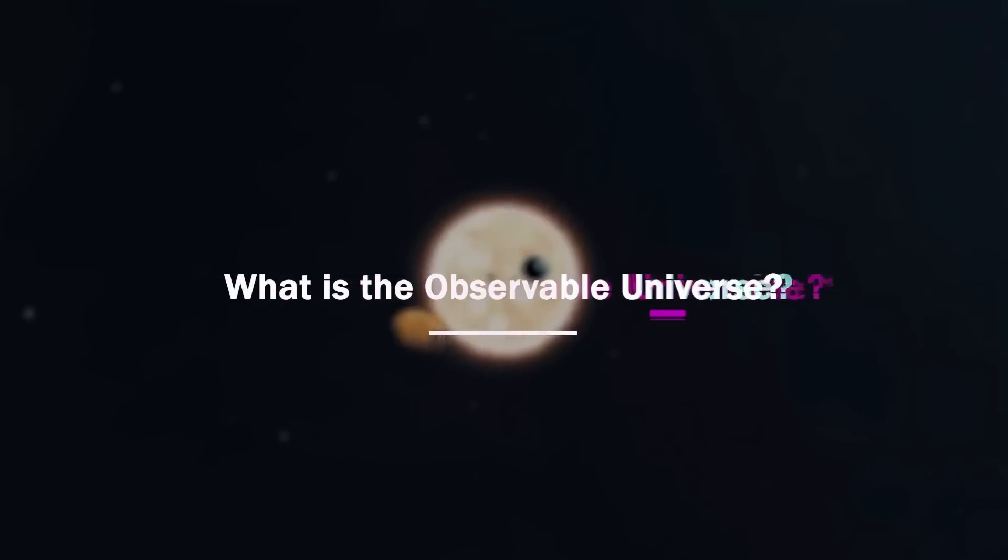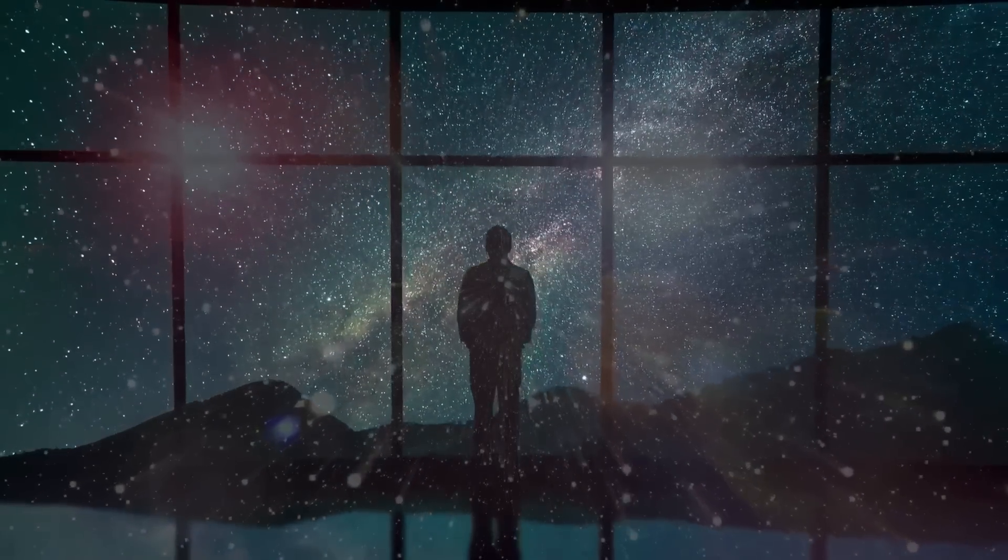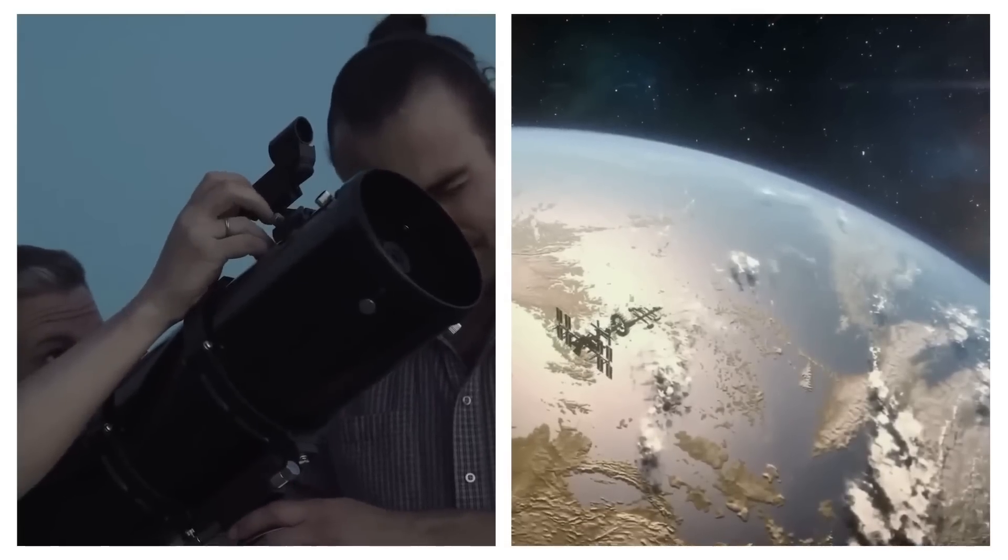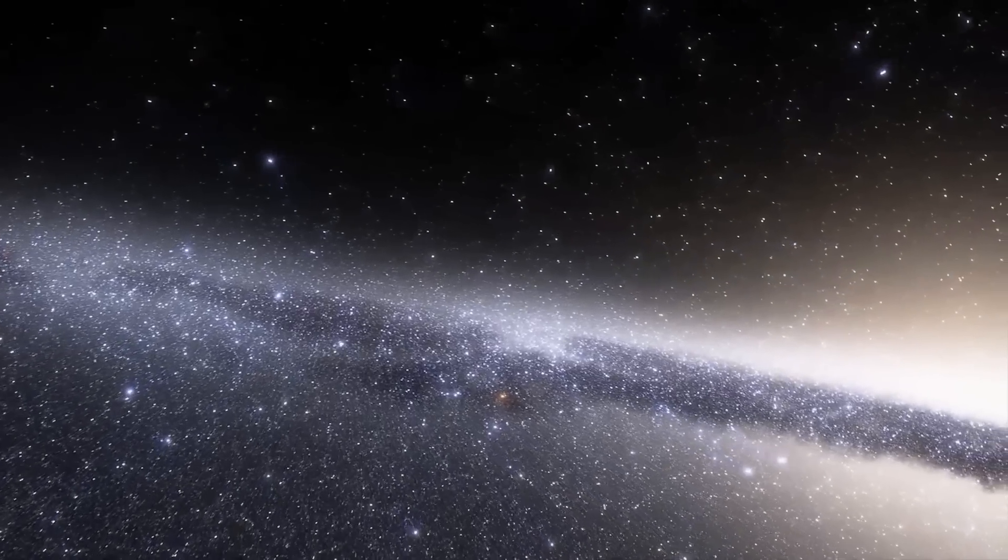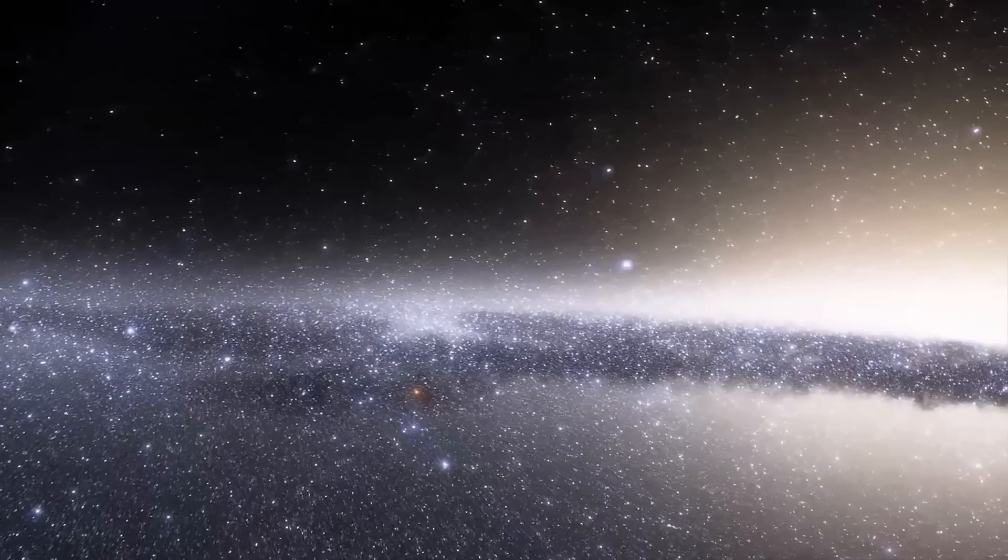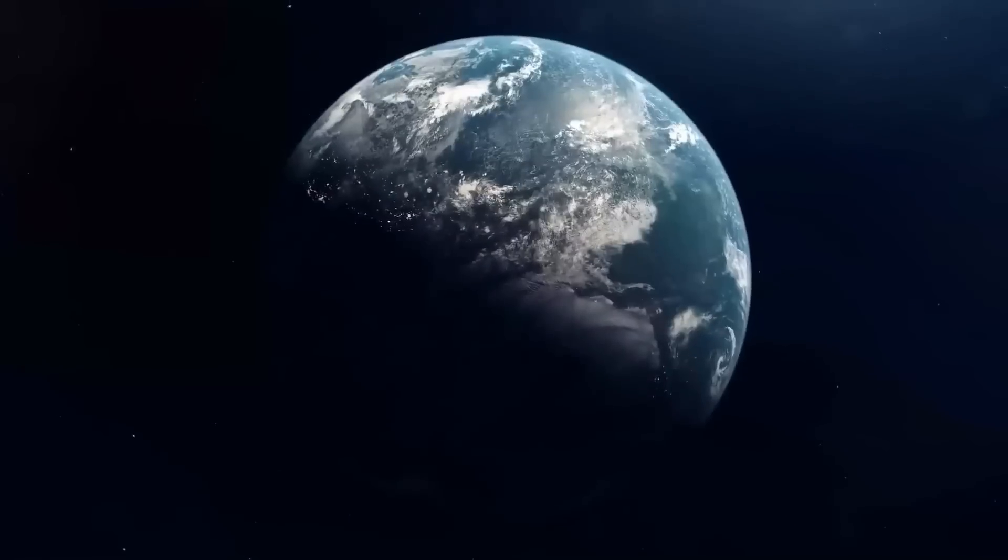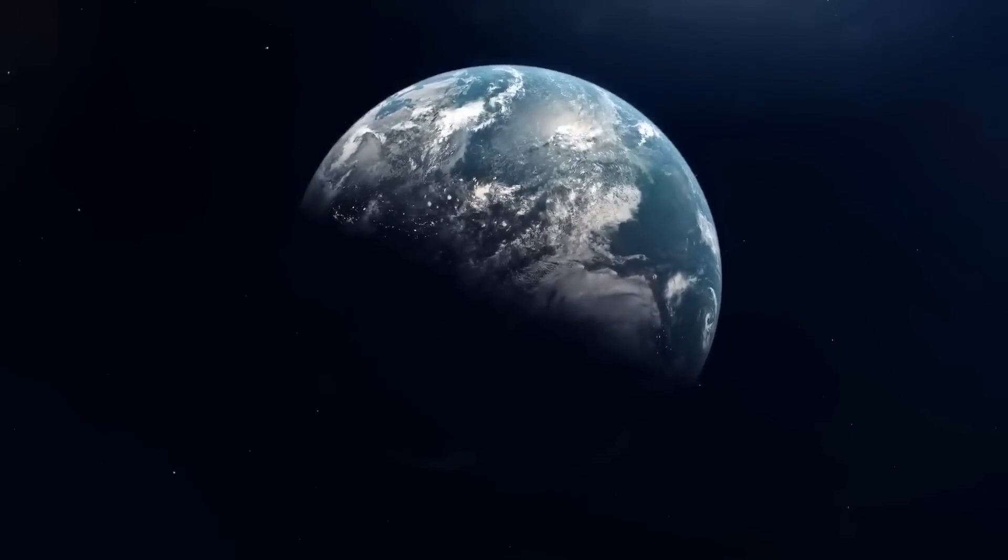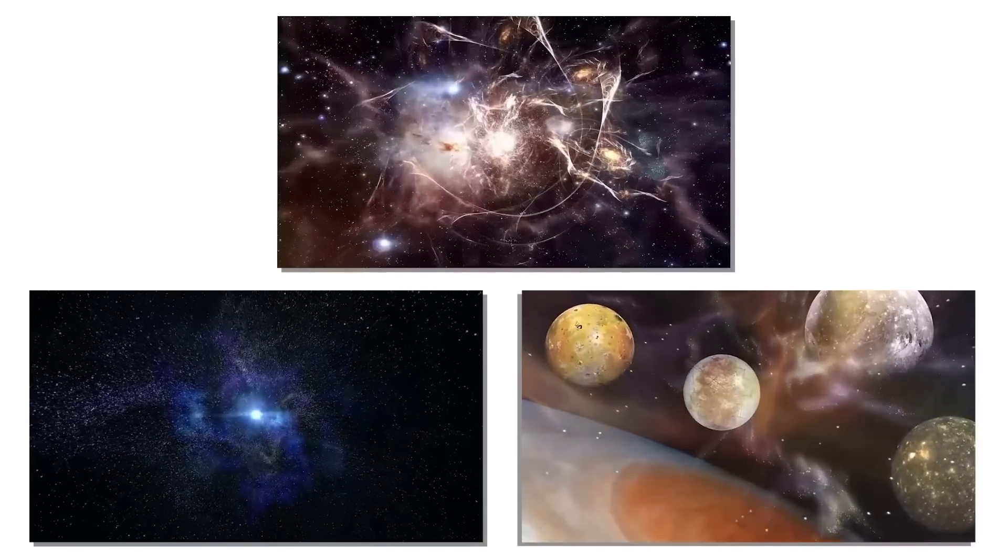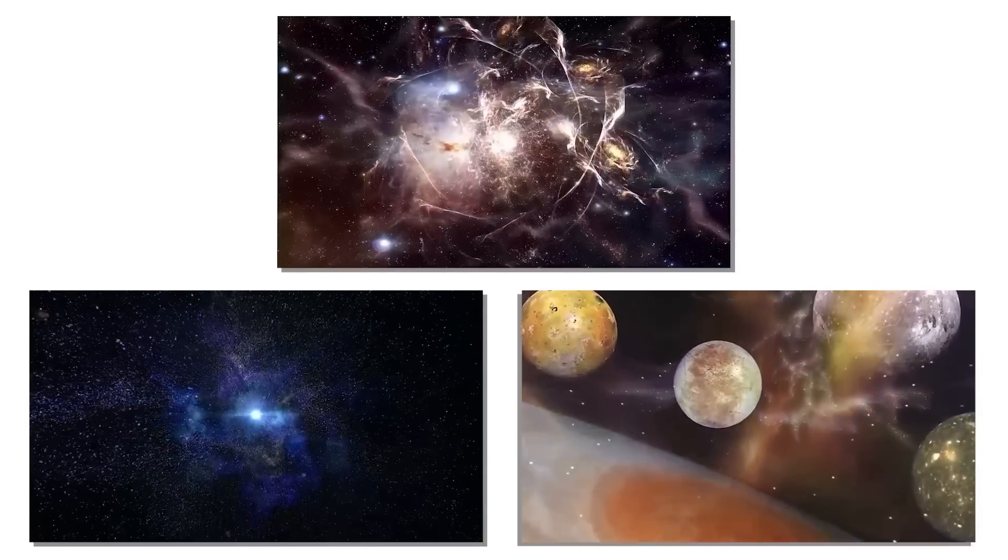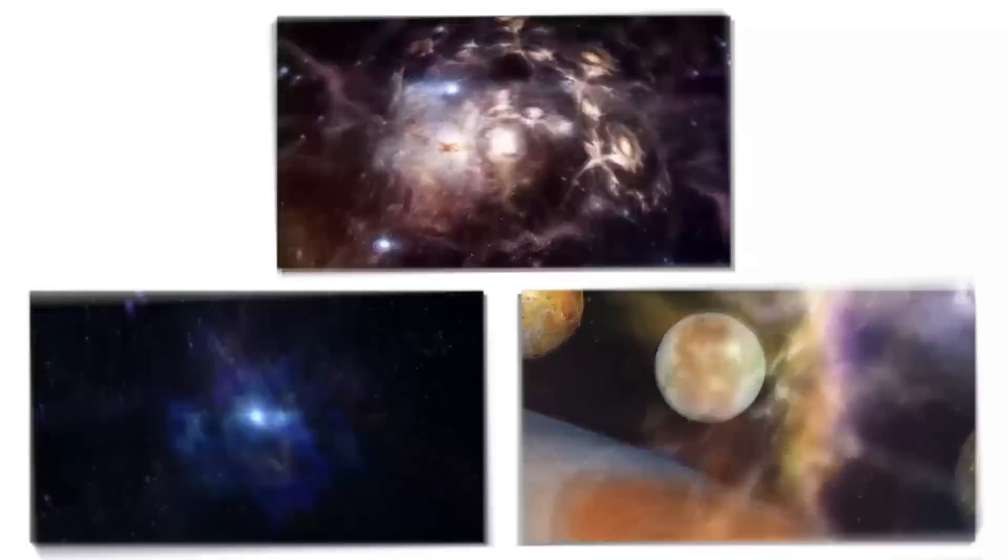What is the observable universe? The observable universe refers to the part of the universe that we can observe and study through telescopes and other instruments. It is limited by the fact that light, the primary way we gather information about the universe, can only travel at a finite speed. This means that we can only observe objects and events that are within a certain distance of us, and we cannot directly observe objects or events that are too far away or that occurred too long ago.